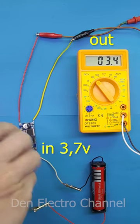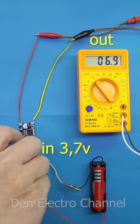By rotating the variable resistor that is installed on the board, you need to achieve the output voltage that you need.